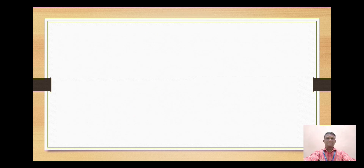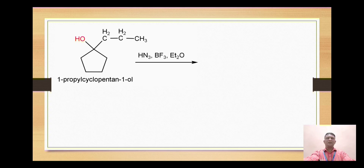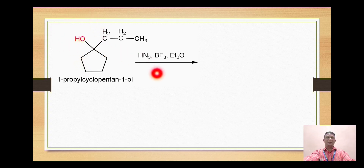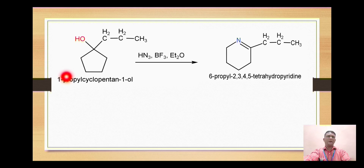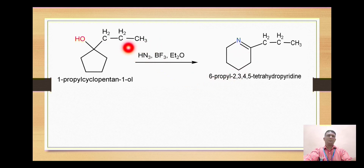Next, the example of alcohol: when alcohol is treated with hydrazoic acid, the hydroxy group is substituted with the azide group, and on further reaction a ring expansion occurs — the five-membered ring is converted into a six-membered ring. Five carbons come from the ring and one nitrogen from hydrazoic acid makes up the six-membered ring, generating an imine.